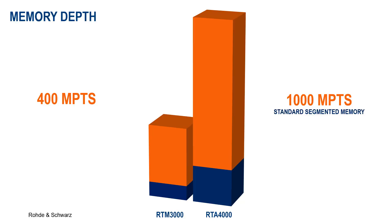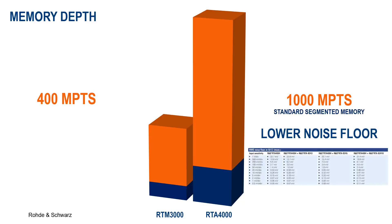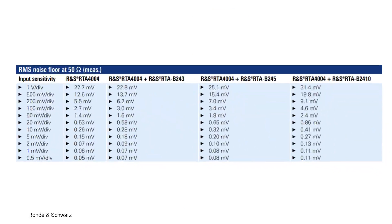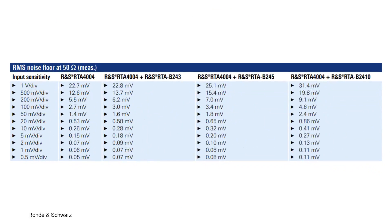Another significant difference is the noise floor performance. The RTA4000 features a significantly lower noise floor, and unlike the RTM3000, a table is available listing the noise floor values at various input sensitivities.